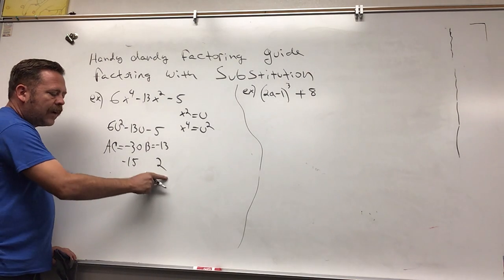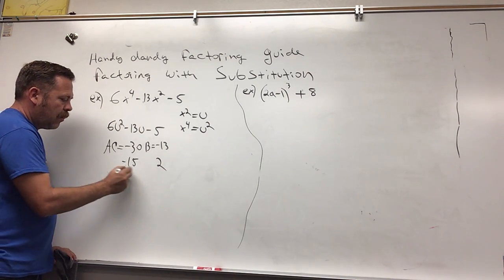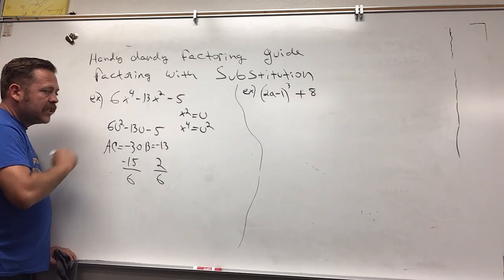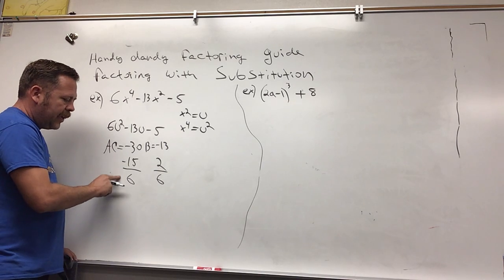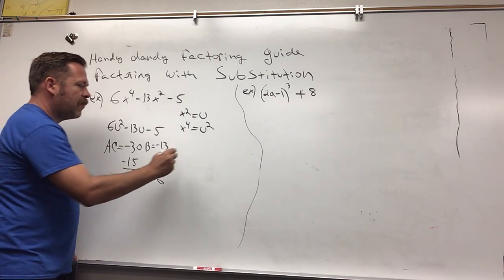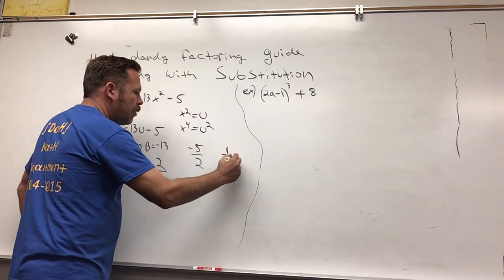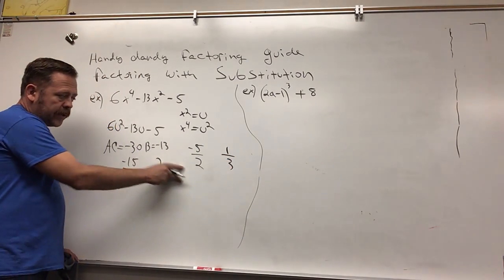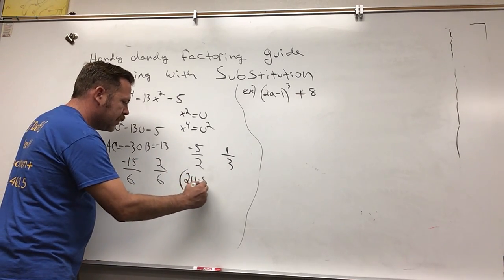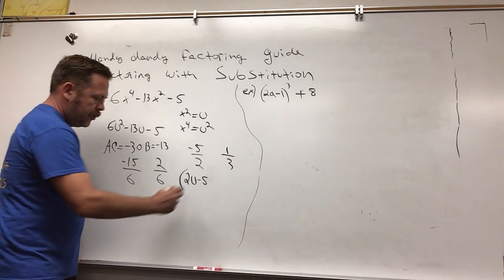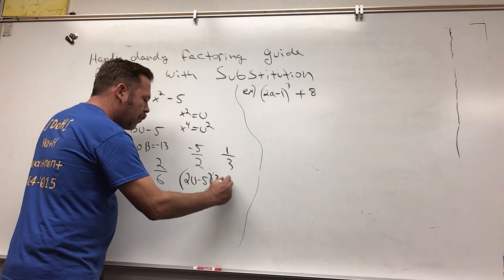Then after we find those numbers, you put them over a, which is 6 over 6 over 6, and then we simplify each fraction. Negative 15 over 6 simplifies to negative 5 over 2, and then 2 over 6 simplifies to 1 over 3. Remember we bring the denominators to the front, so what I'll have is (2u - 5)(3u + 1).